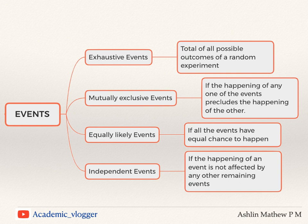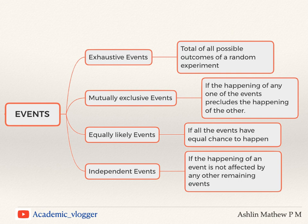Next is equally likely events. If all events have an equal chance of happening, then such events are called equally likely events. For example, in tossing an unbiased or fair coin, both head and tail have an equal chance of showing up, so both events are said to be equally likely events.